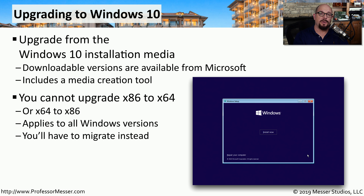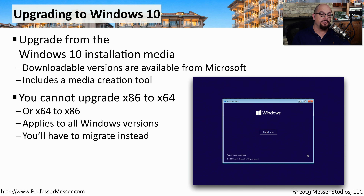One important consideration about an upgrade is you cannot upgrade from a 32-bit version to a 64-bit version of Windows, and you can't upgrade from a 64-bit version to a 32-bit version of Windows. To be able to perform that type of upgrade, you would need to use a Windows migration tool to copy off all of your information, perform the upgrade, and then copy everything back onto that system.